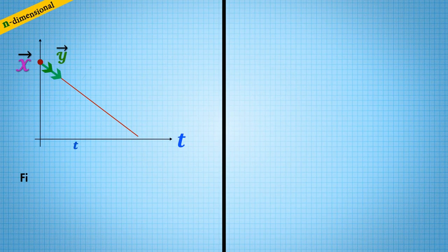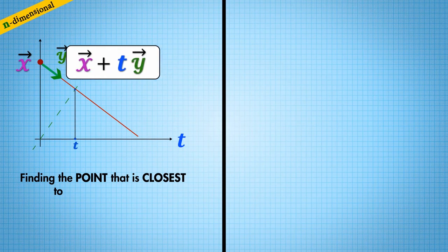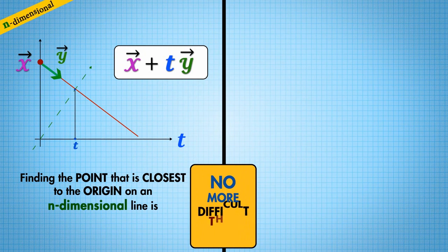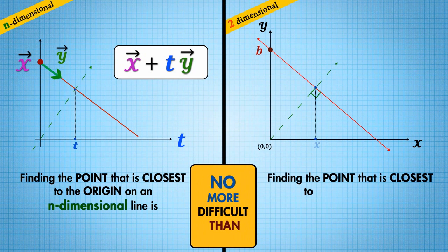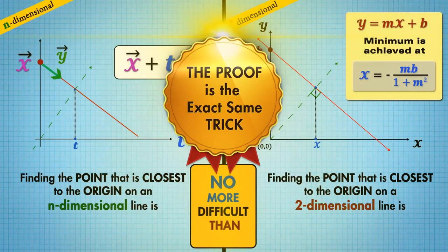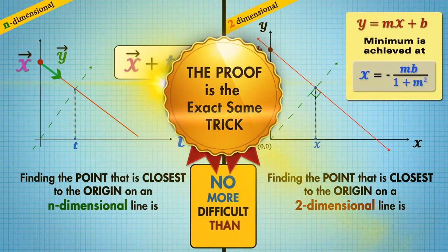It turns out that finding the point that is closest to the origin on an n-dimensional line is no more difficult than finding the point that is closest to the origin on a two-dimensional line. The proof is the exact same trick.